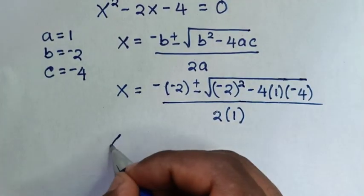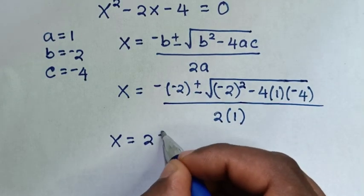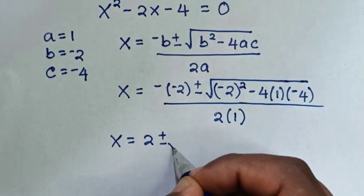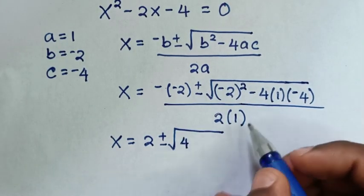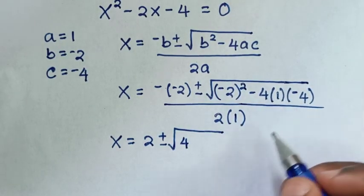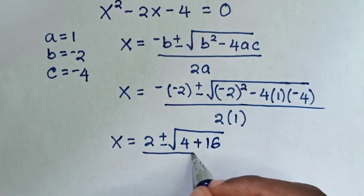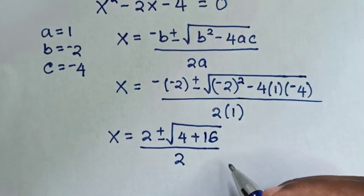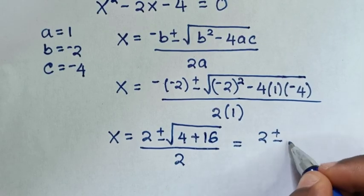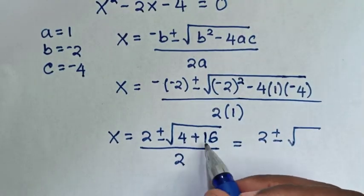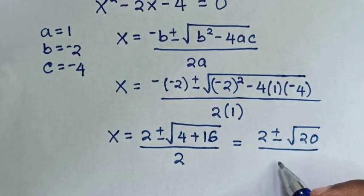Then it will be x is equal to negative times negative 2 is positive 2, plus or minus square root of negative 2 square is 4, negative 4 times 1 times negative 4 is positive 16, then over 2. So that gives us 2 plus or minus square root of 20, over 2.